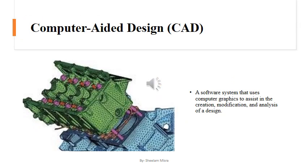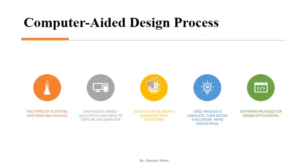What is CAD? CAD is Computer Aided Design. It is the creation, modification, and analysis of a design. We can say it is a software system that uses computer graphics to assist in the creation, modification, and analysis of a design. The process involved in design includes two types of activities: synthesis and analysis. Synthesis is largely qualitative and hard to capture on a computer, while analysis can be greatly enhanced with computers.